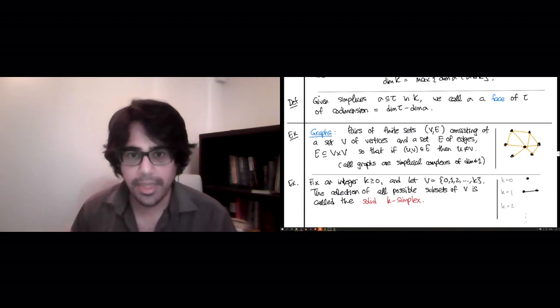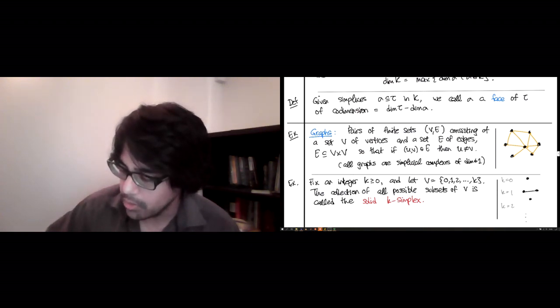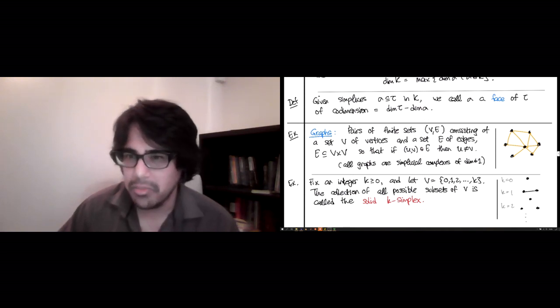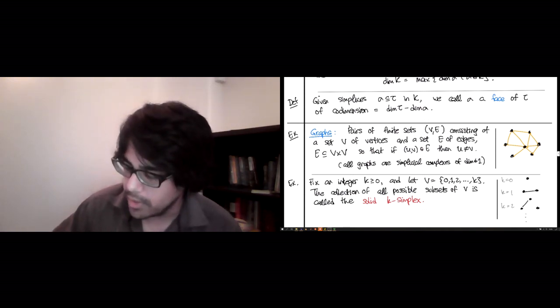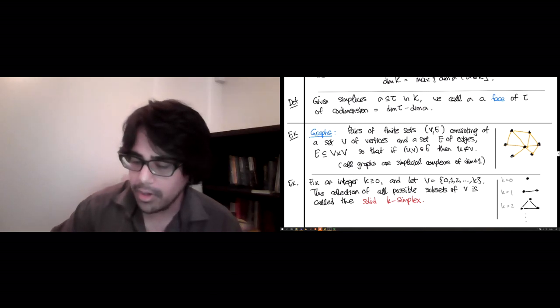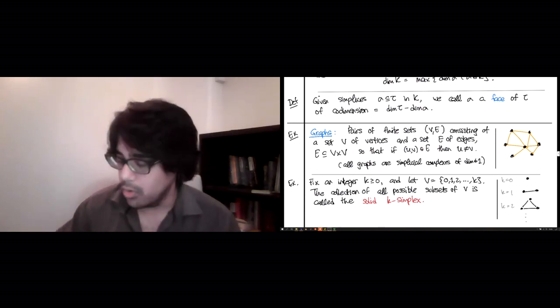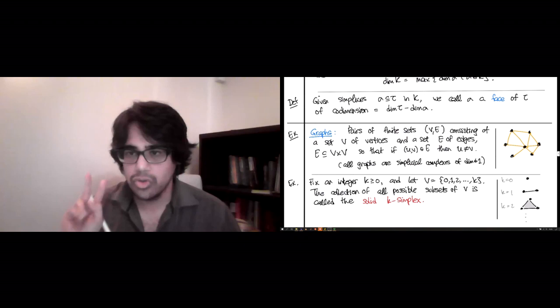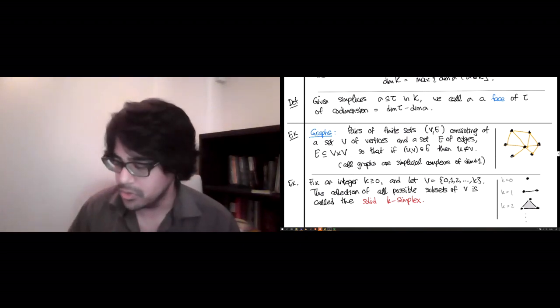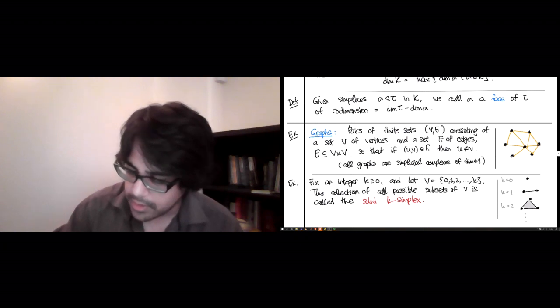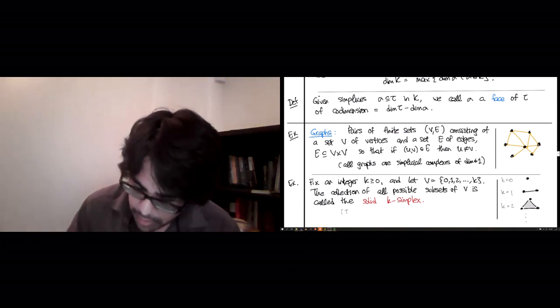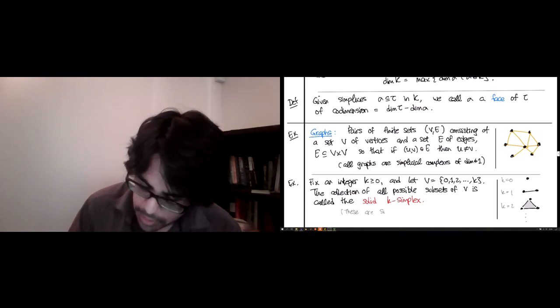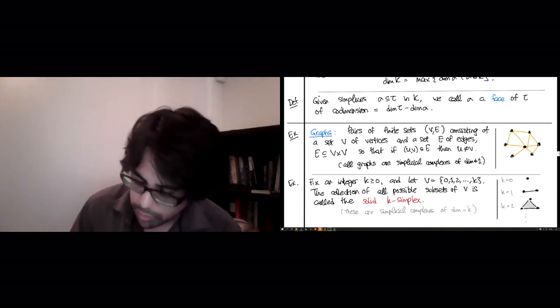K equals two is the first thing we're going to see of a higher dimension. So this has zero, one, two, and remember all possible subsets. So zero, one is there, zero, two is there, one, two is there, and now here's the new exciting thing, the triple zero, one, two. Now this is a simplex of dimension two. As you can see, it takes sort of two dimensions to draw it. These are simplicial complexes of dimension equal to k.